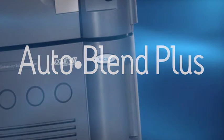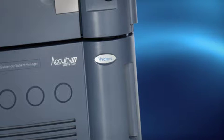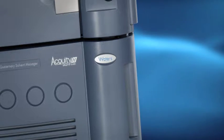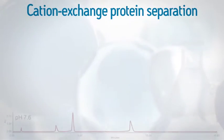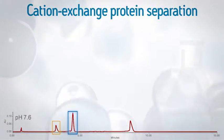It's a standard software feature of the ACQUITY UPLC H-Class and ACQUITY UPLC H-Class Bio systems. Auto Blend Plus was first developed for use with protein separations, where the ability to test small incremental changes in pH is one of the most powerful tools for adjusting a separation.